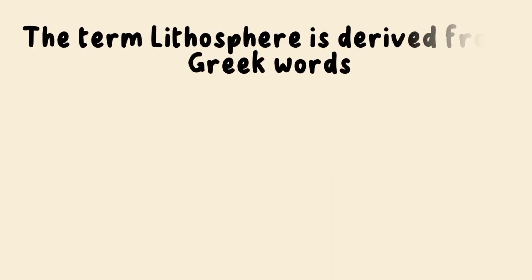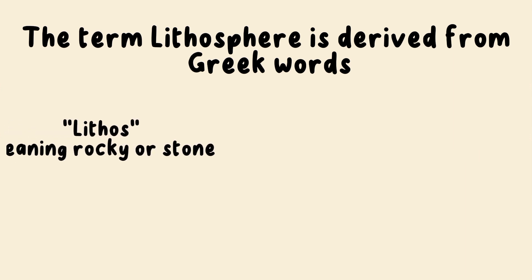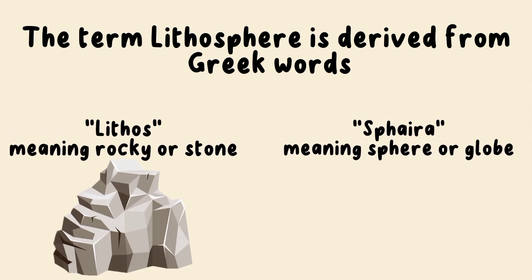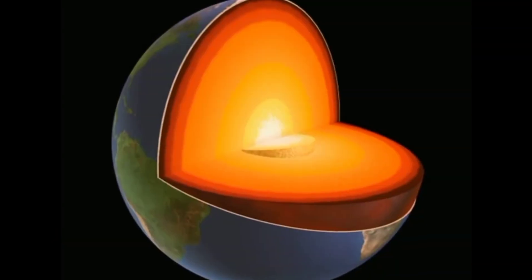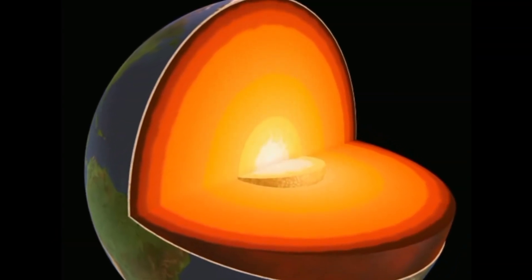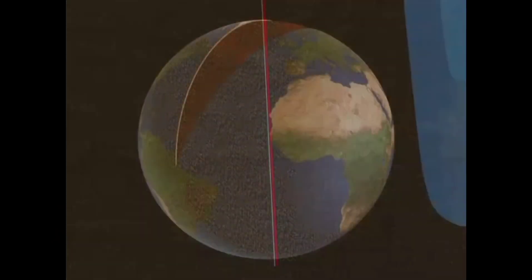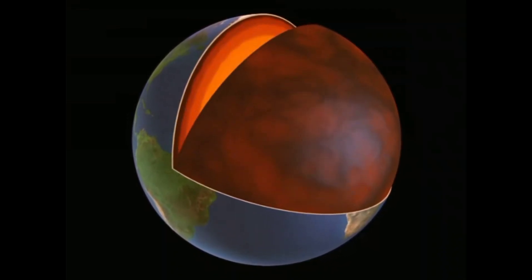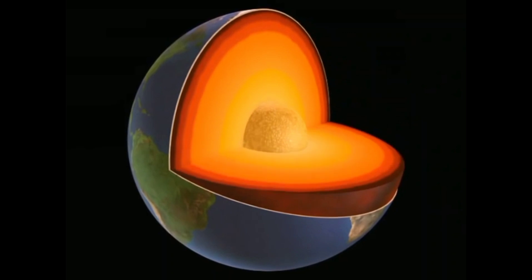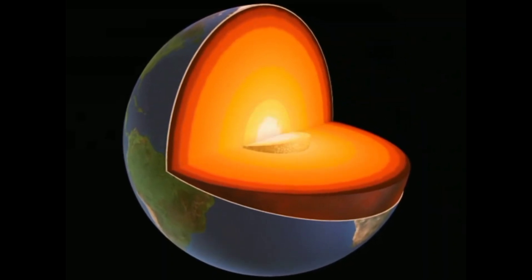Fun fact: did you know the term lithosphere was created from a Greek term? In Greek, 'litho' refers to rock, and 'sphaira' refers to the sphere. Since our Earth's outer layer is a solid crust, the name was coined by scientists. The lithosphere is made up of the crust and the region of the upper mantle that exhibits elastic behavior over timescales of at least a few thousand years. It floats in a semi-plastic layer called the asthenosphere.